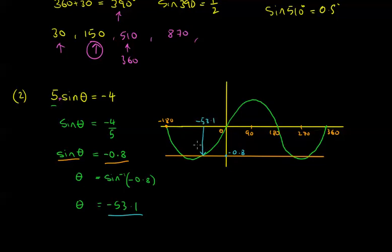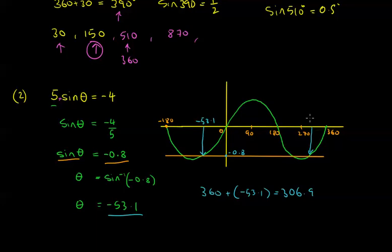I want some positive answers. If I've got the point at minus 53.1, the corresponding point one full period away is 360 away. So I just need to do 360 plus minus 53.1, which is effectively 360 take away 53.1. That gives us 306.9. So this answer is 306.9 — coming in 53.1 degrees from 360.